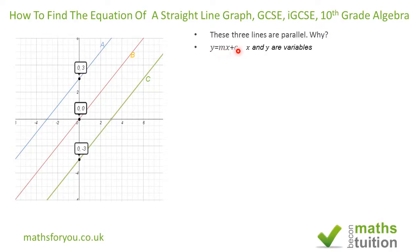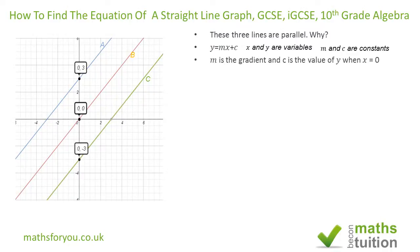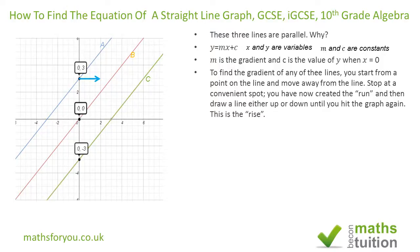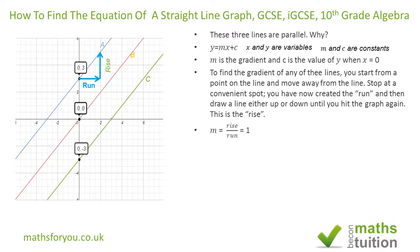For a given graph, m and c are constants peculiar to that graph — you must take them as a package for a given straight line. To find m, we draw a horizontal line from any point on the line from left to right, so that value is positive. We call that the run, then draw a vertical line from that point — that becomes the rise. Dividing the rise by the run gives you the gradient m.